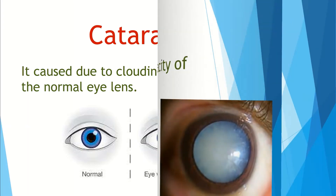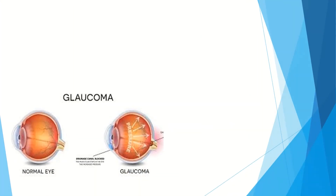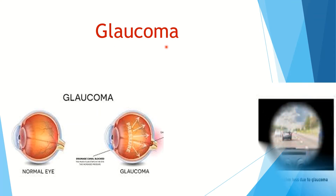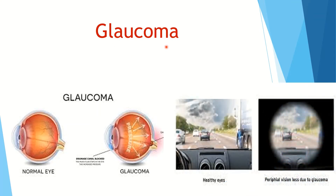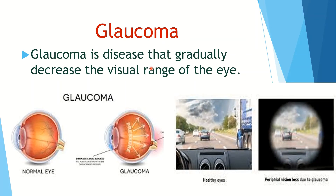Glaucoma damages the optic nerve of the eye. Usually, it results from high blood pressure inside the eye. People having diabetes have a high risk of developing glaucoma. You can see in this picture the vision loss due to glaucoma compared to healthy eyes.